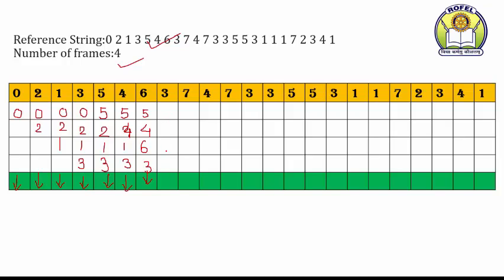Now page 3 is already in the memory — we don't need to replace any page. Then 7, but 7 is not in the memory, so we have to replace a page. Victim pages are 5, 4, 6, and 3. 3 ko abhi humne use kiya hai, 6 se pahle use kiya tha, then 4, then 5 — sab se purana page number 5 hai. So we can replace page number 5 with page number 7. Frames: 7, 4, 6, 3. That is a page fault.